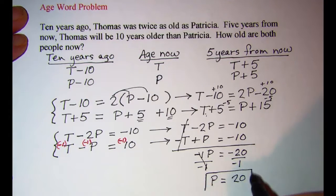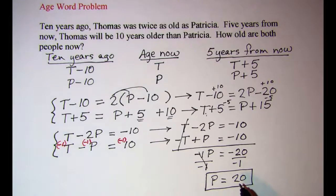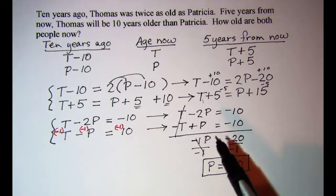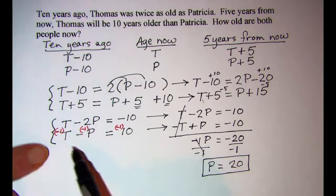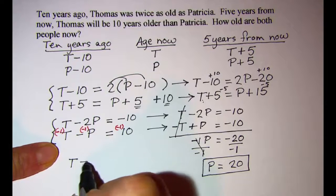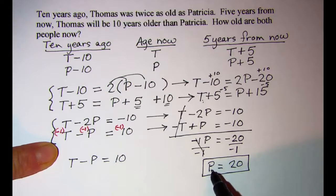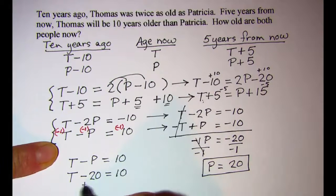Now this is Patricia's age, twenty years old. Now once you have one of the answers, one of the ages, take that number and substitute it back into one of the equations that you have written previously. I am going to put it back into this second equation. So that was T minus P equals 10. And so twenty is going to be substituted for P. So T minus 20 equals 10. Now I can add twenty to both sides. And so T equals thirty.